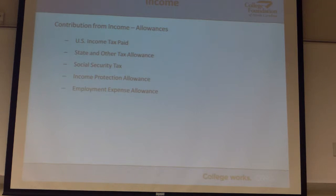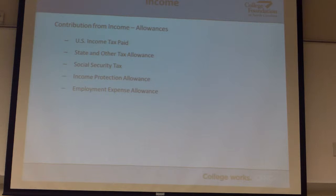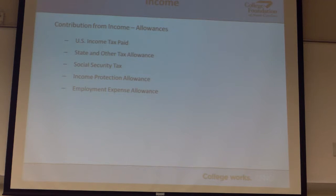Let's say you make $30,000 a year for your family of four. You don't have a lot of discretionary income to send a kid to a really expensive school. In fact, most of your income for a family of four is going to be just paying bills.